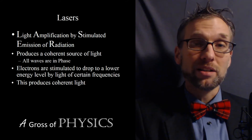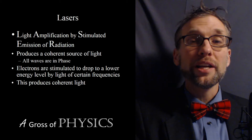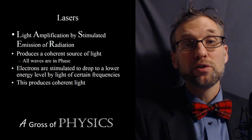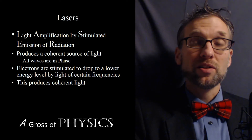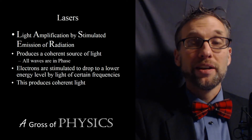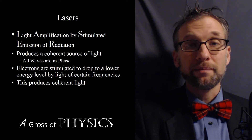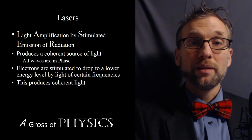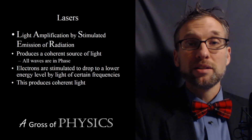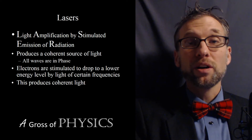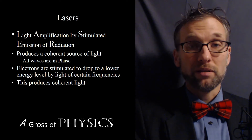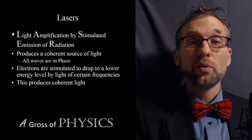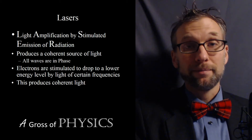What that means is that we take a source and we excite all of the electrons inside the source. The laser I use in my classroom is a helium-neon laser — it produces red light. There's gas inside the laser that is a combination of helium and neon. When we put a high voltage through it, it makes the electrons inside the gas excited and they all drop to a lower energy level. When electrons jump from higher to lower energy levels, they emit light.